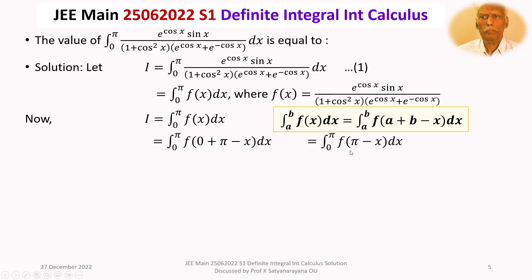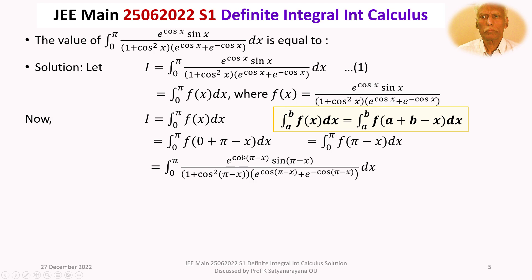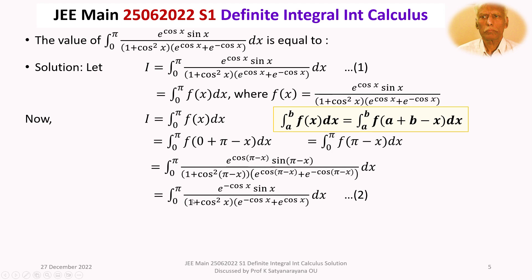Wherever there is x, substitute π − x in f(x). Using cos(π − x) = −cos x and sin(π − x) = sin x, this becomes the integral from 0 to π of e^(−cos x) · sin x divided by (1 + cos²x)(e^(−cos x) + e^(cos x)) dx. Let us call this integral equation 2.